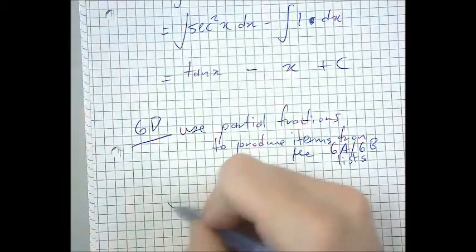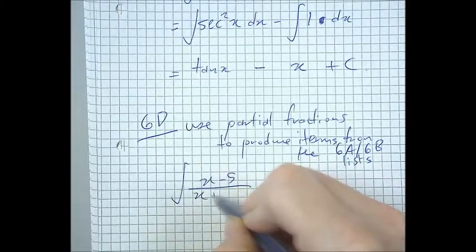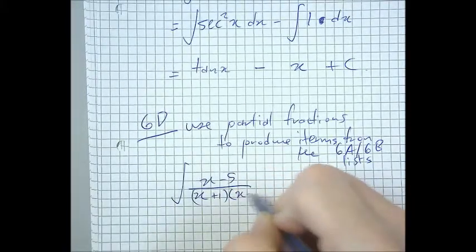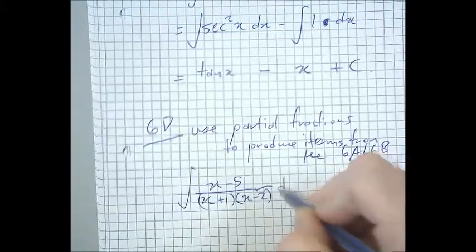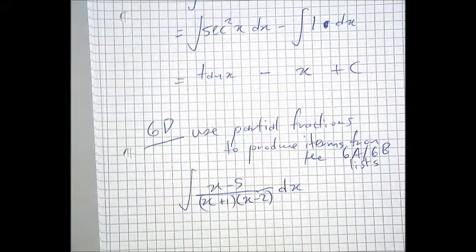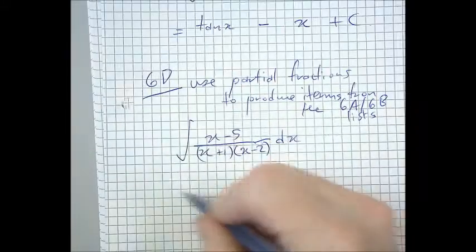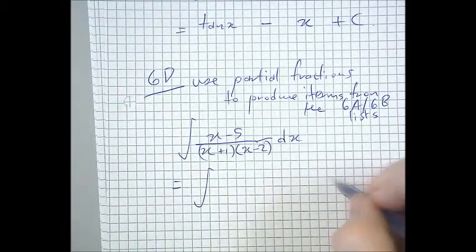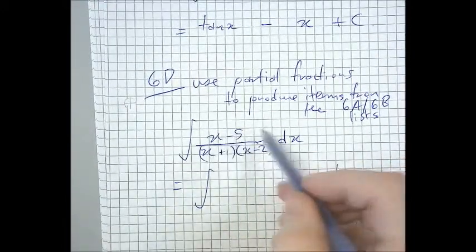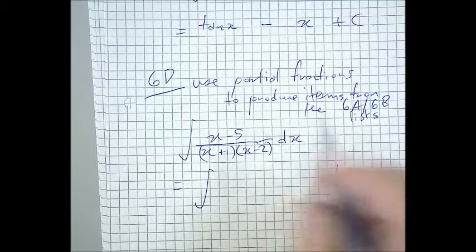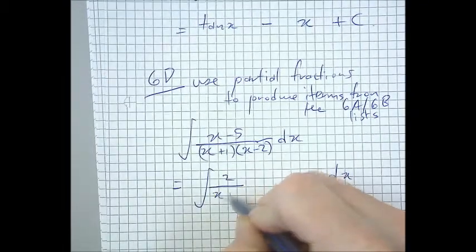So, for example, that does not look like it's in the list at all. Nothing in the list looks like that, okay? But if you use partial fractions on it, then that becomes this.